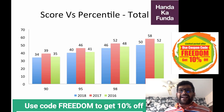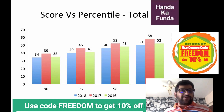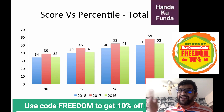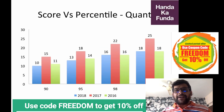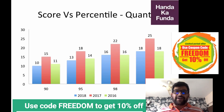In LRDI, to clear the sectional cutoff at around 90 percentile, you need only 9 questions. Whereas for the same 90 percentile in verbal, you need 18. But Quant is the one where it changes drastically, and this is what I wanted to discuss.